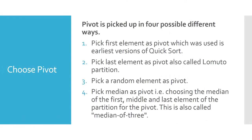The pivot can be picked in four different ways. One is picking the first element as the pivot, used in the earliest versions of quicksort. Two is picking the last element as the pivot, also called Lomuto partition. Three is picking any random element from the array. Four is picking the median of the first, middle, and last elements — called the median of three.